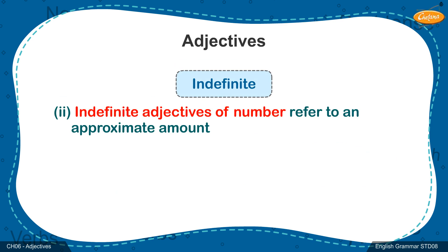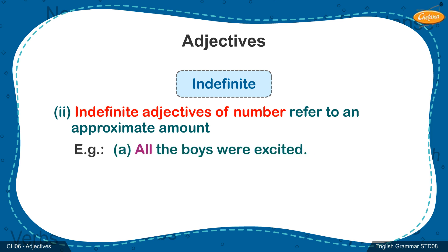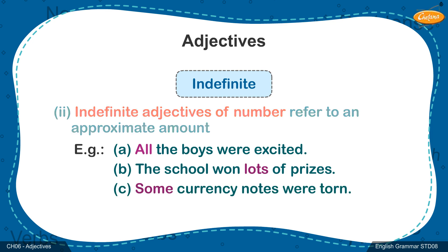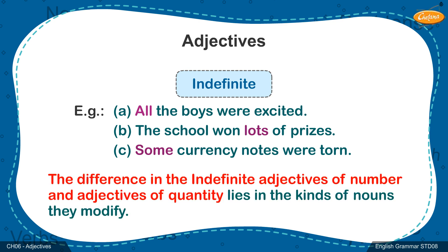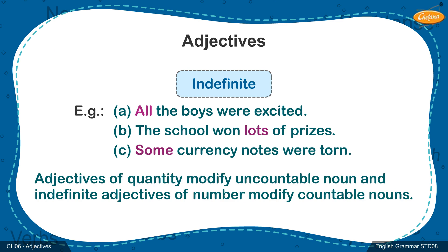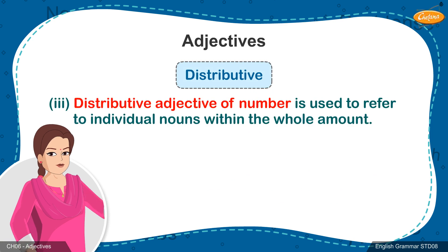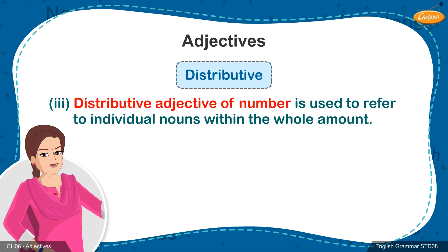Indefinite adjectives of number do not refer to an exact number, but rather to an approximate amount. In sentences such as 'All the boys were excited,' 'The school won lots of prizes,' or 'Some currency notes were torn,' the words all, lots, and some are the adjectives that give information about the boys, prizes, and currency notes respectively. You may notice that the indefinite adjectives of number are the same as the adjectives of quantity. The difference in the two types lies in the kinds of nouns they modify. Adjectives of quantity modify uncountable nouns, and indefinite adjectives of number modify countable nouns.